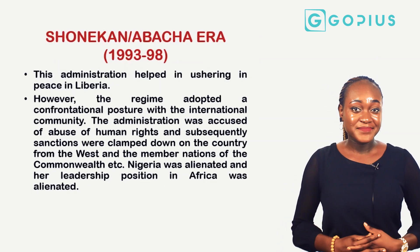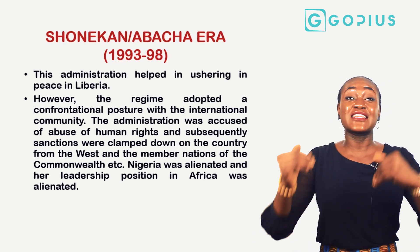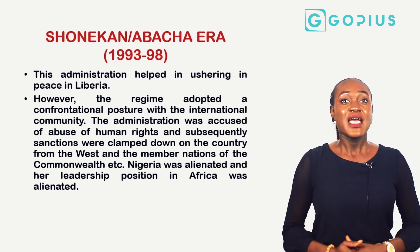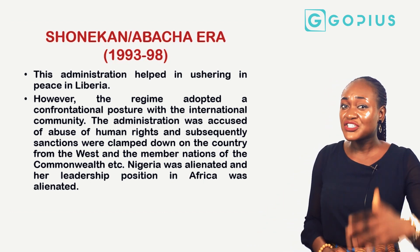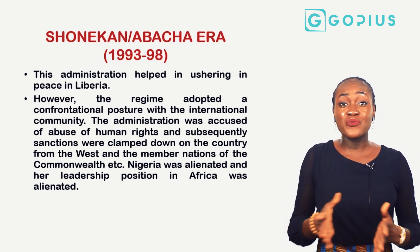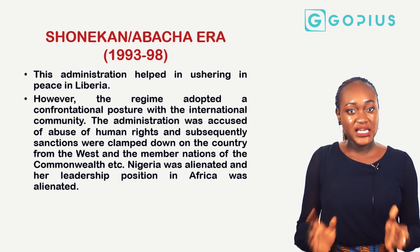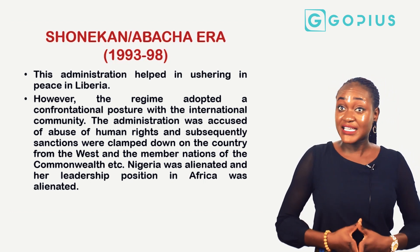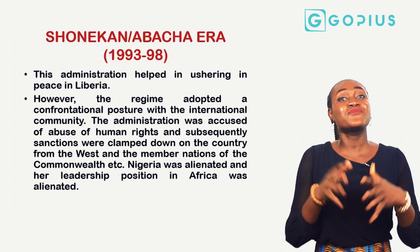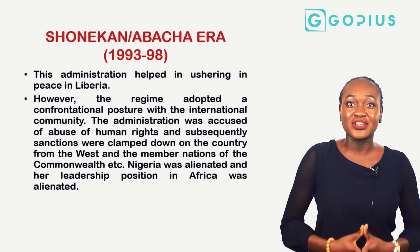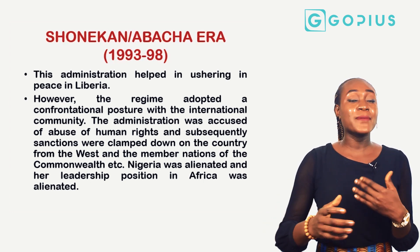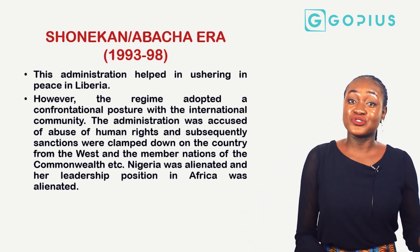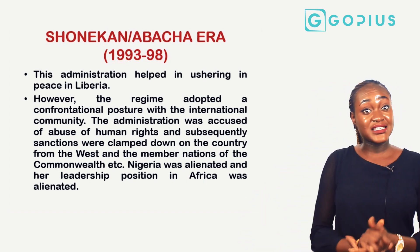The Shonekon-Abacha era helped usher in peace in Liberia, but this regime adopted a confrontational posture with the international community — not aligned with the west or the east. The administration was accused of abuse of human rights, and consequently sanctions were imposed on Nigeria from the west and the Commonwealth member nations. Nigeria was alienated, and her leadership position in Africa was also lost during this period.